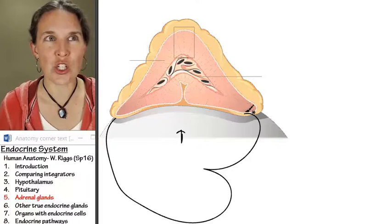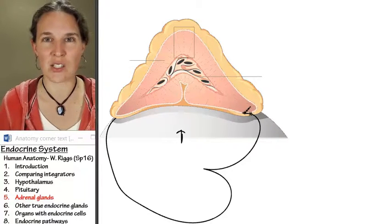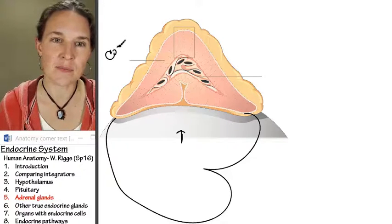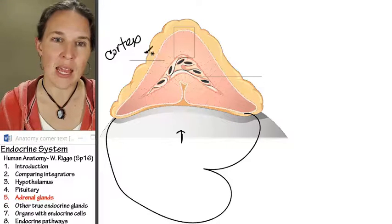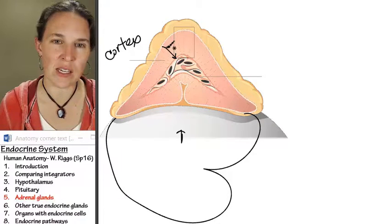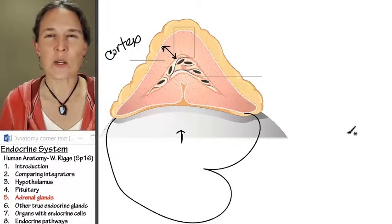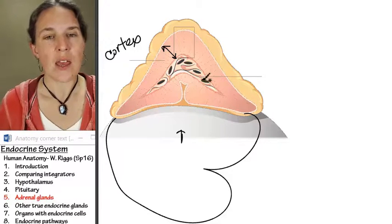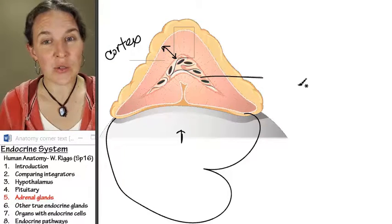It's made of two distinct zones. We have the adrenal cortex, and the cortex is the outer part of the adrenal gland, and the cortex is true endocrine tissue. The medulla, the adrenal medulla,